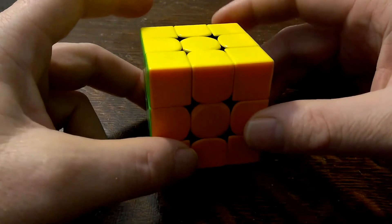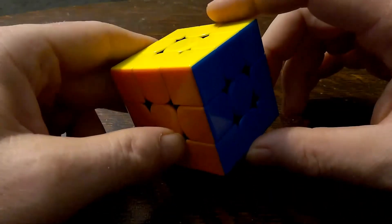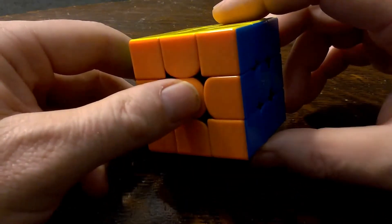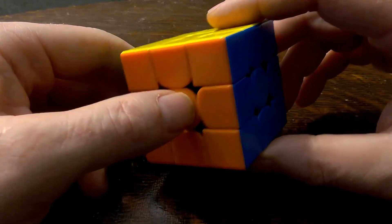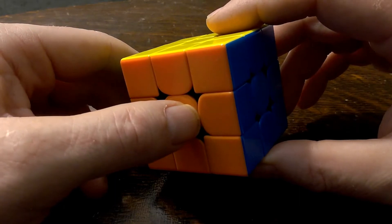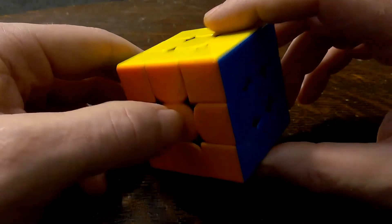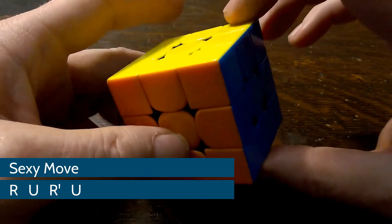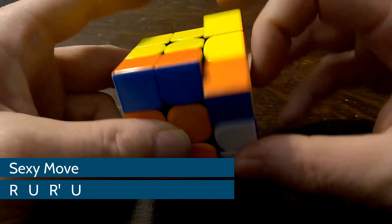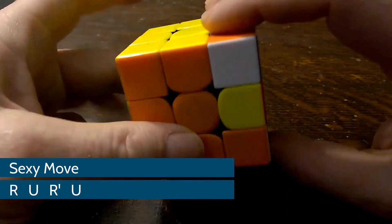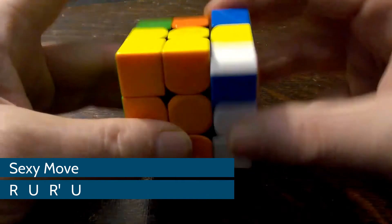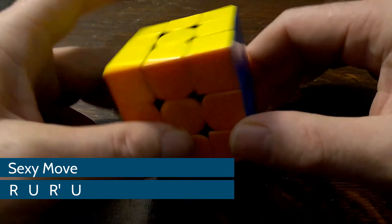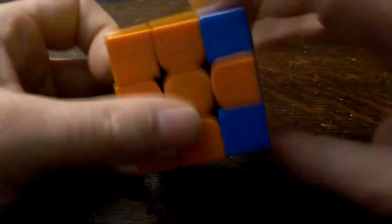All right, so the third and final tool that we're going to add to your toolbox today is an understanding of how to use the Sexy Move while you are doing F2L. Now, you already learned the Sexy Move if you watched my earlier video on this. If not, that's okay. I'm going to review it for you really quickly. So the algorithm for the Sexy Move is R, U, R prime, U prime. And you want to get fairly fast at it. R, U, R prime, U prime.